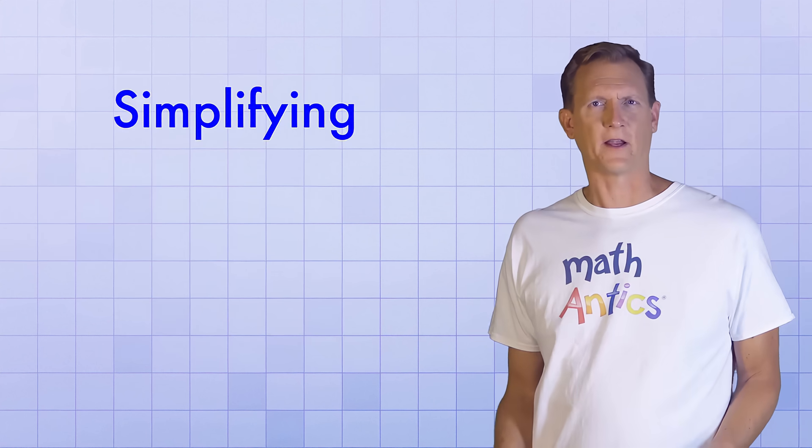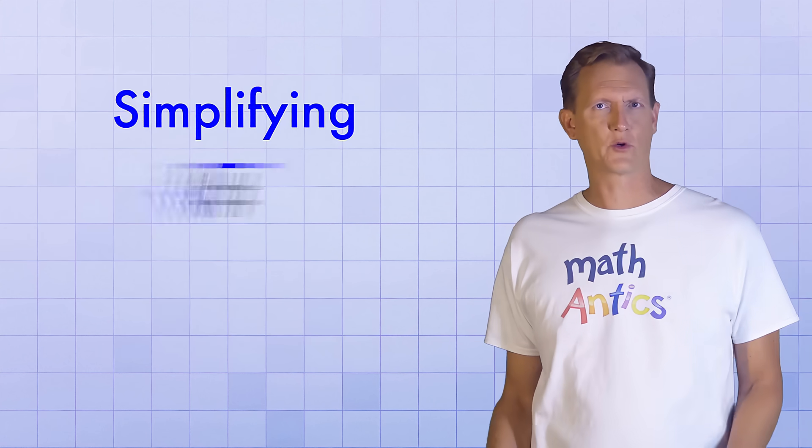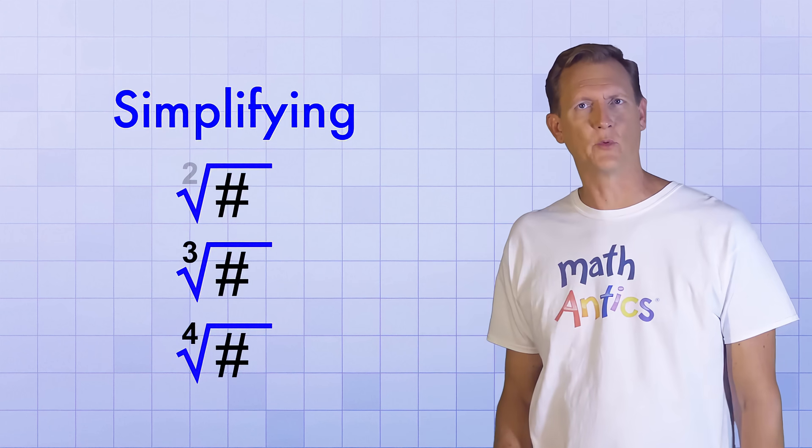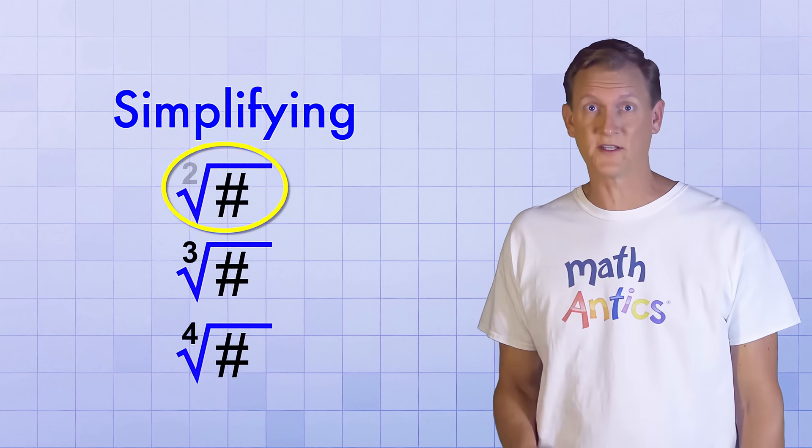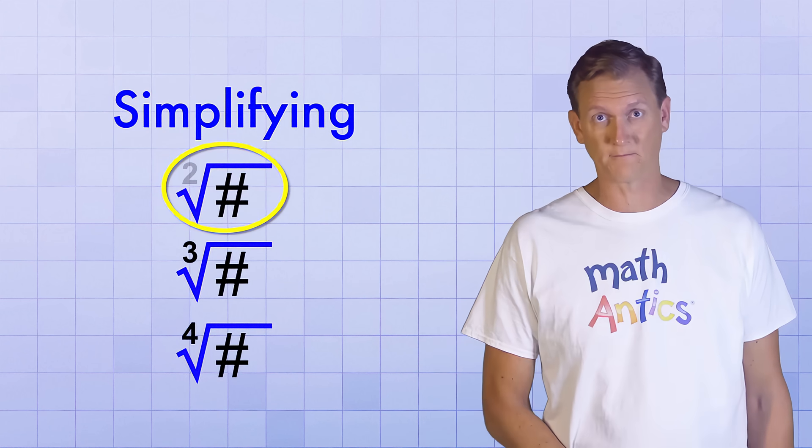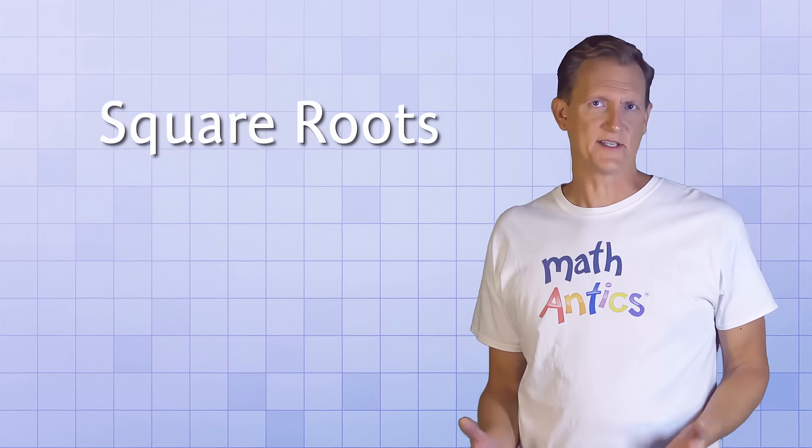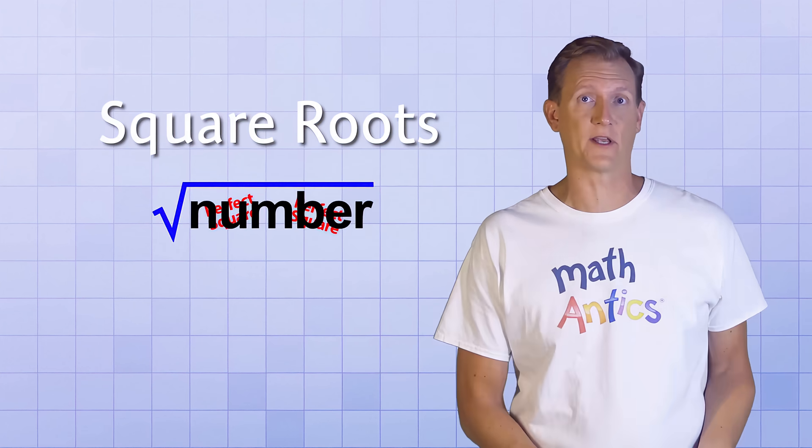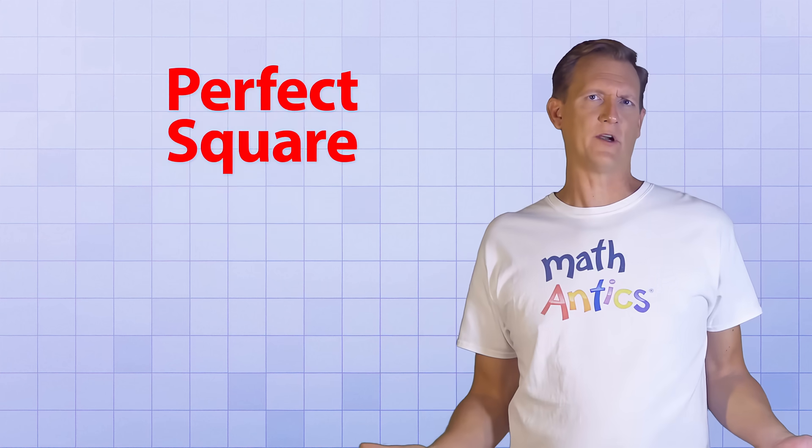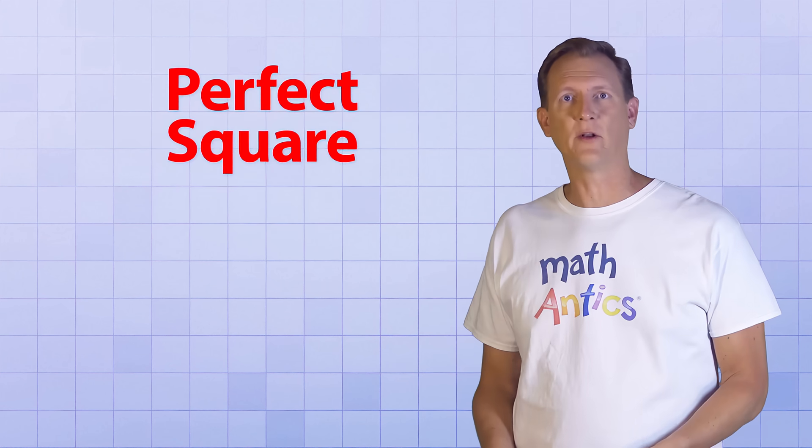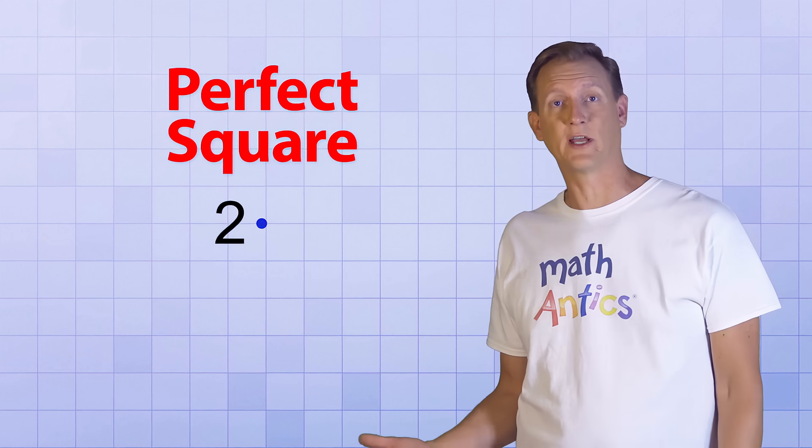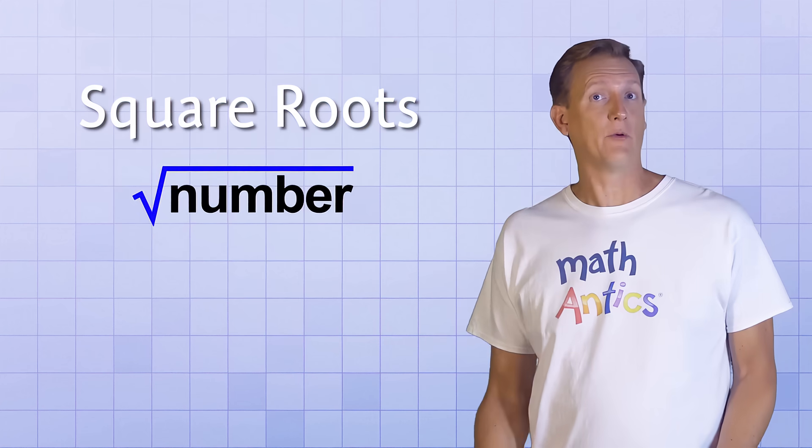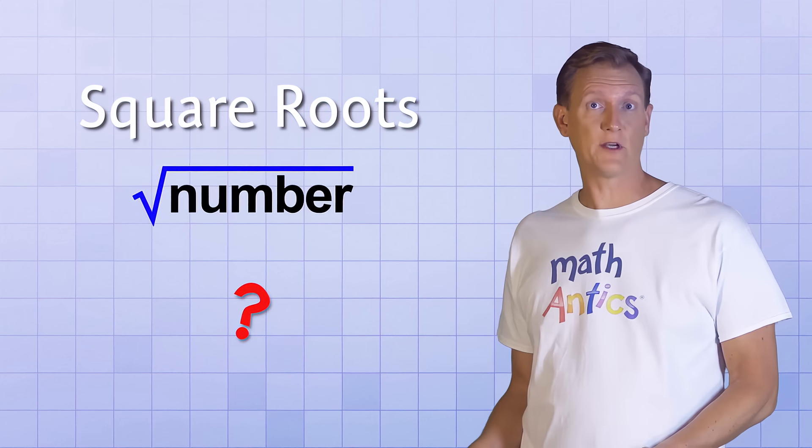This definition of simplifying would apply to any type of root—square roots, cube roots, fourth roots, and so on. But for the next couple examples, we'll just focus on square roots since they're the kind you'll encounter most often. In the case of square roots, to simplify, you'll need to find out if there's any perfect squares hiding in the number under the radical sign. You remember what a perfect square is, right? It's just what you get when you multiply a whole number by itself, like 2 times 2, or 5 times 5, or 30 times 30.